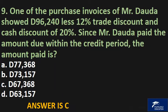One of the purchase invoices of Mr. Dauda showed 96,240 less 12% trade discount and cash discount of 20%. Since Mr. Dauda paid the amount due within the credit period, the amount paid is: A. 77,368, B. 73,157, C. 67,368, D. 63,157. The answer is C.